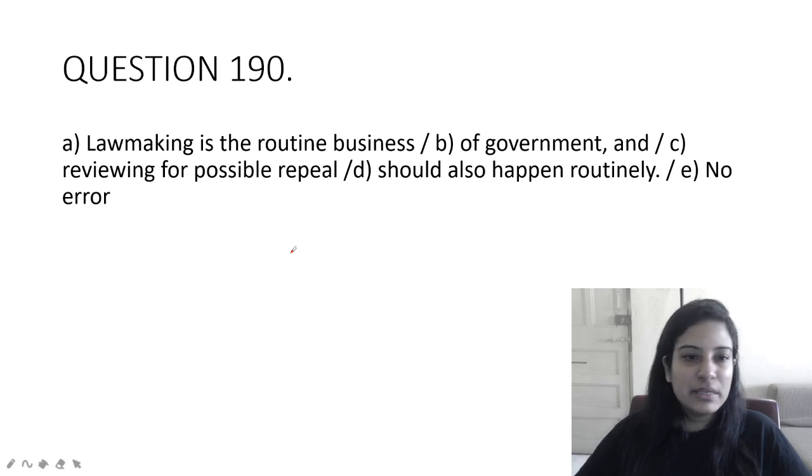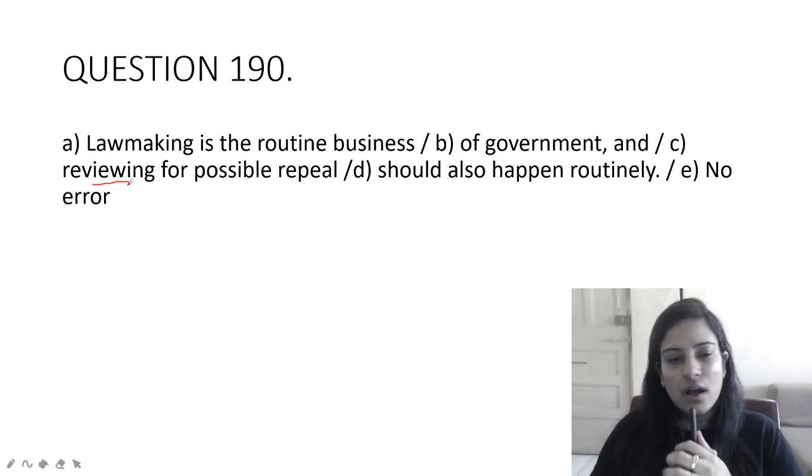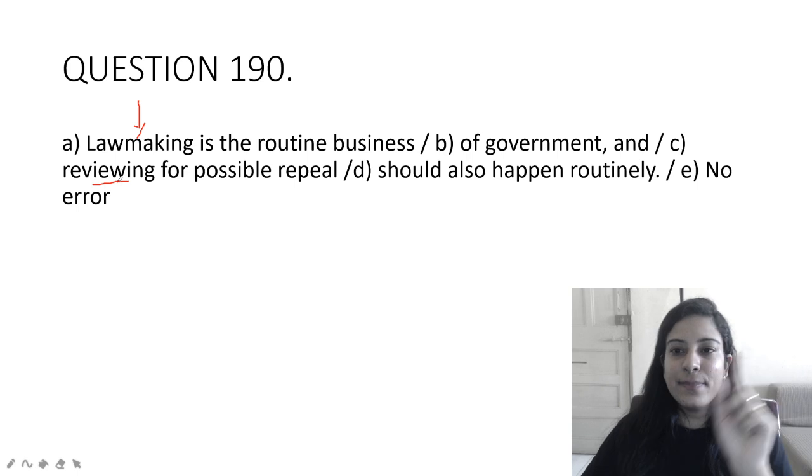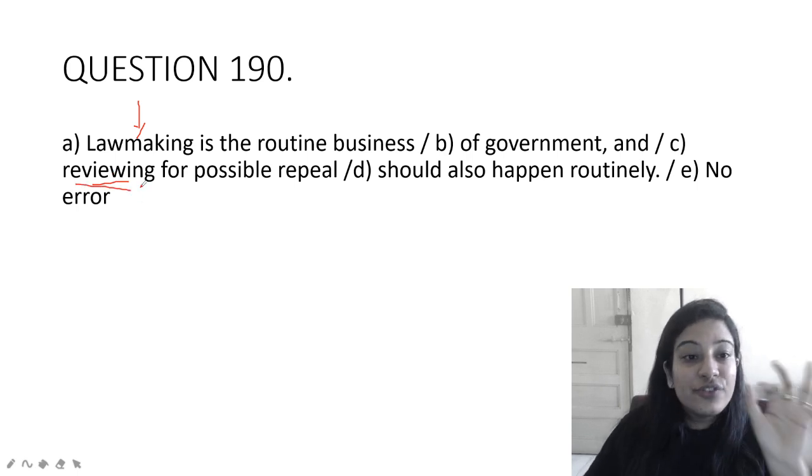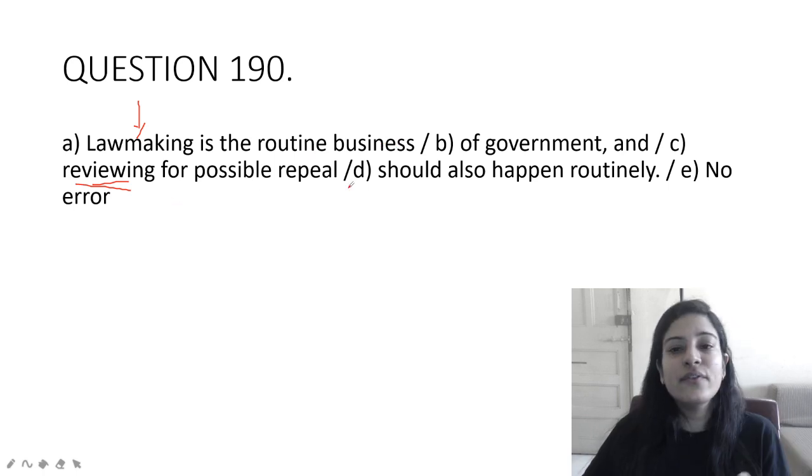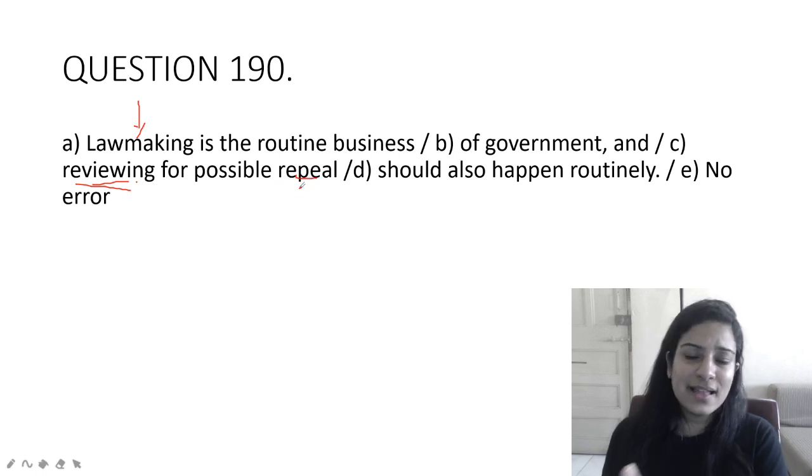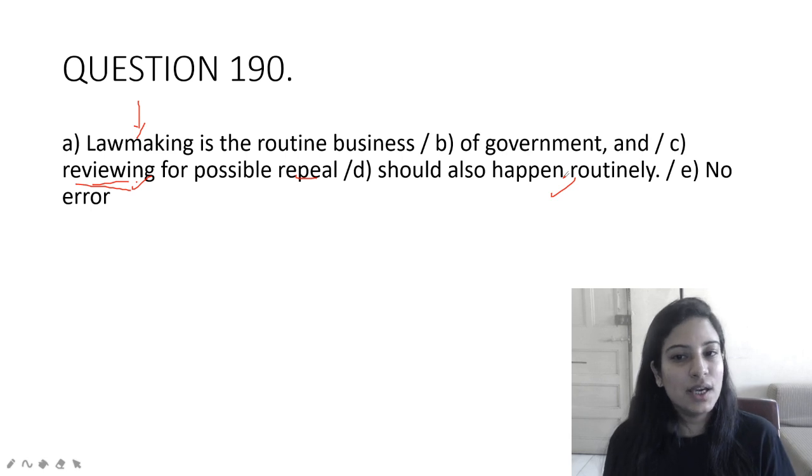Lawmaking is a routine business of government and reviewing for possible repeal should also happen routinely. What is the error here? Reviewing is not going to be, it should be review. Why? Lawmaking has been given. Rule of parallelism. Lawmaking is not a present participle or verb, lawmaking is a noun. So you don't have parallelism to that, it also has to give us a noun. And review for possible repeal. So he says lawmaking is a routine business and review for possible repeal should also happen routinely.